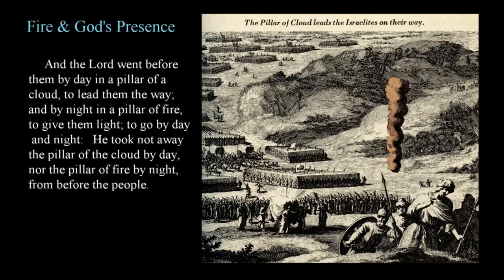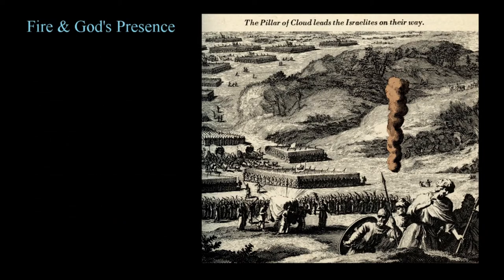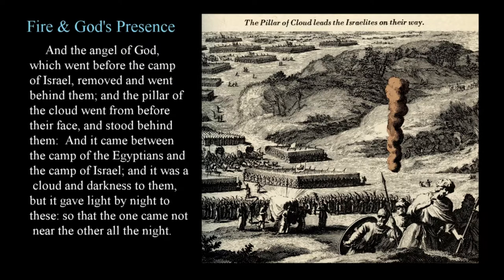He took not away the pillar of the cloud by day, nor the pillar of fire by night, from before the people. Exodus 13:22. This column of cloud and fire not only signified the presence of God but provided protection as well. This is demonstrated as the children of Israel fled from the Egyptians and were able to cross the Red Sea on dry land. The angel of God which went before the camp of Israel removed and went behind them, and the pillar of the cloud stood behind them, coming between the camp of the Egyptians and the camp of Israel. It was a cloud and darkness to them, but gave light by night to Israel, so that the one came not near the other all the night. Exodus 14:19-20. This impassable boundary exemplified God's power and provision, incorporating fire that protected and gave guidance.